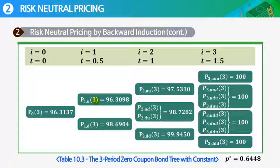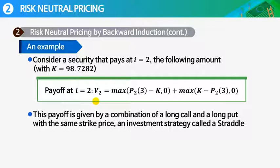Risk-neutral pricing by backward induction looks like this. Now, here we can consider a security that pays at t equals 2 the following amount with K equal to 98.7282. This payoff has a call option part and a put option part. So this security is a sum of call option on bond and put option on bond.